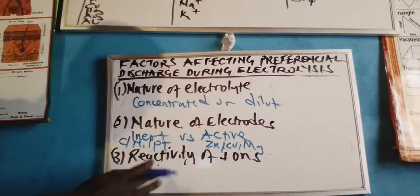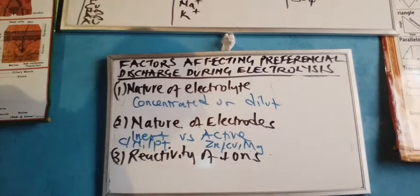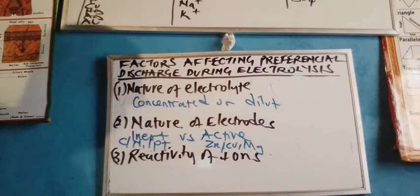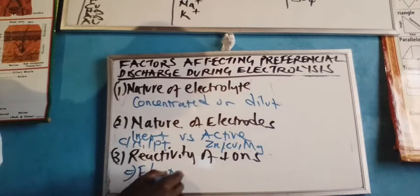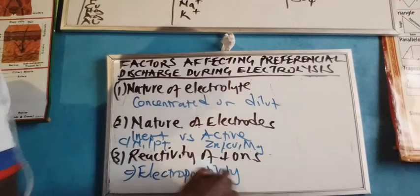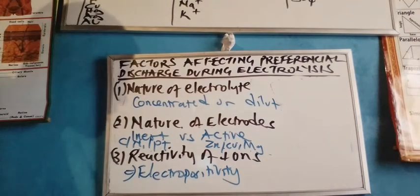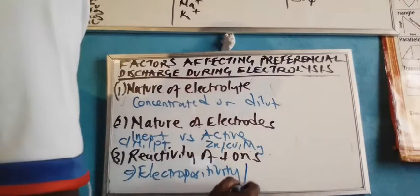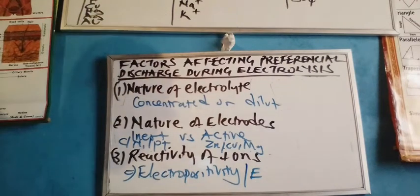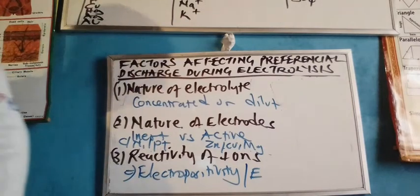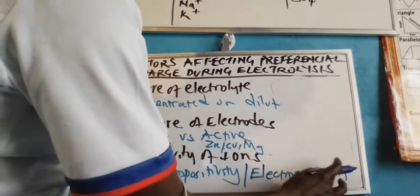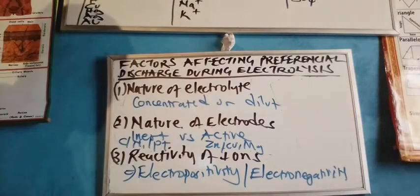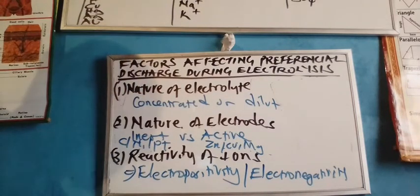The third factor which affects the preferential discharge of ions during electrolysis is the reactivity of ions. In this case, the reactivity of ions is dictated upon by their electropositivity or electronegativity. Electropositive species are those which have the tendency of discharging electrons and becoming positively charged. Electropositivity determines the preferential discharge of ions in respect to the reactivity of those ions.